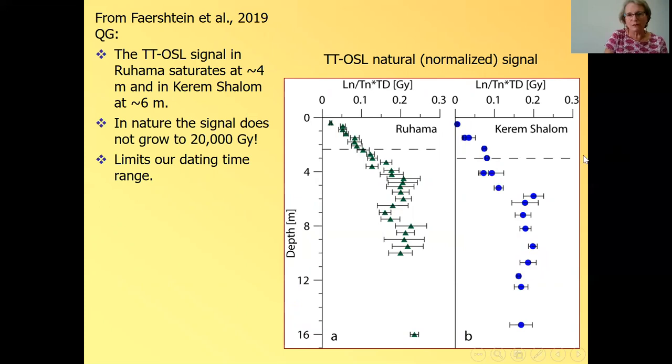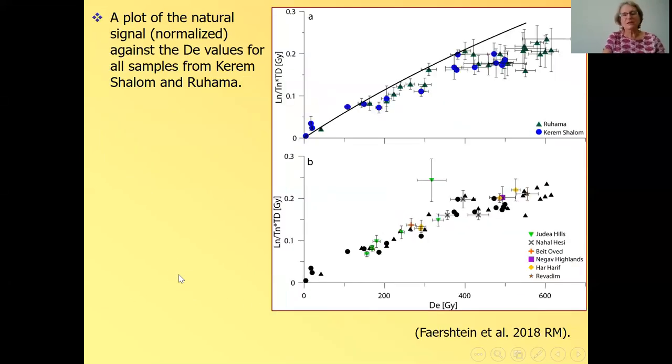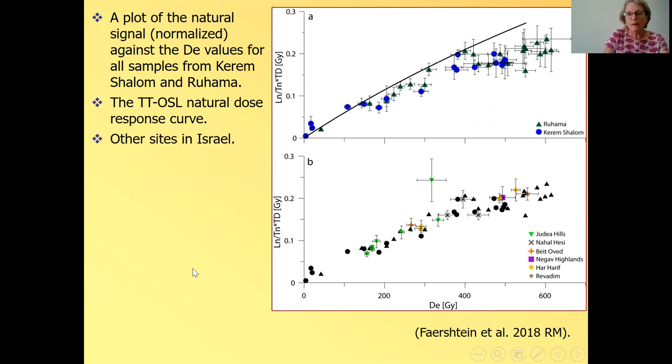And, but if we go back to our candle of how far back we can go in time, and we go back to the sections in Ruhama and Kerem Shalom, we can see that the TTOSL signal in Ruhama stops growing at about five meters, four or five meters, and in Kerem Shalom maybe six meters. So it definitely does not grow to 20,000 grays. And this limits our time range. Another thing that Feirstein et al showed is that if you plot all the samples, you can see that the equivalent doses don't go beyond 600 gray. It doesn't matter how old the sample is. And it is similar behavior where we take all the samples that were measured by TTOSL in Israel from all throughout the country. And you see that we don't get equivalent doses beyond 600 grays, no matter how old the sample is. And this is explained by that the signal is thermally unstable, which means that we have some signal loss as the traps start filling out.